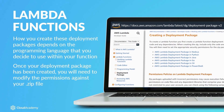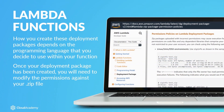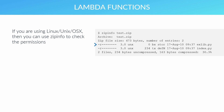Once your deployment package has been created, you will need to modify the permissions against your zip file. Lambda needs global read permissions on the code and any dependent libraries included within the package. If the permissions are not set correctly, there is a chance that the Lambda function may fail on execution. AWS provides a good example of how to check and correct the permissions of your deployment package. If you are using Linux or Unix, you can use zip info to check the permissions by running a command against your package. The dash R and subsequent dashes indicate that files are only readable by the file owner, so your Lambda function could fail as they are not set with global read permissions.